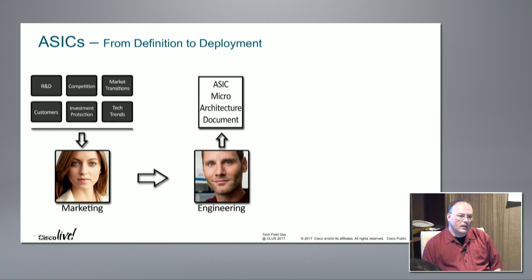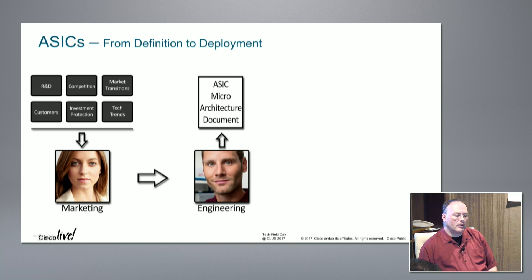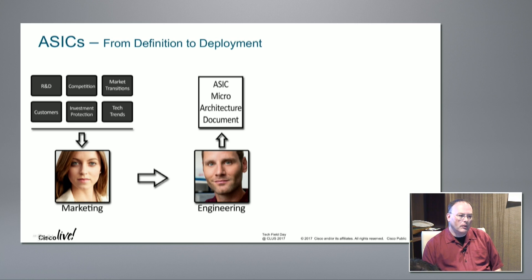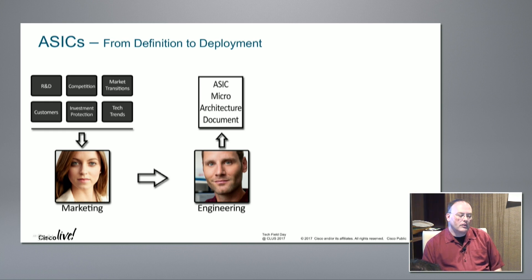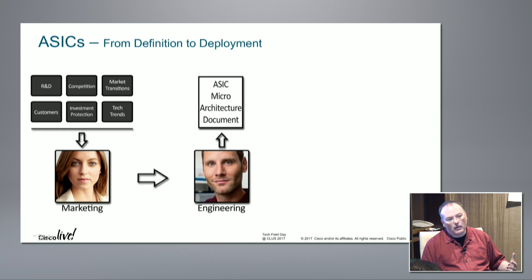An ASIC actually starts with a whiteboard discussion during a planning cycle. A bunch of folks from marketing and engineering gather around a whiteboard. Marketing asks for the world — the moon, the sun, and the stars. Engineering says, 'I can give you the moon, but the sun and stars are going to cost more.' There's a give and take. At the end of this process, after several months, you produce what's called a microarchitecture document — a detailed specification, thousands and thousands of pages long, describing the chip spec.